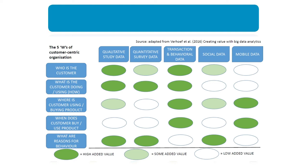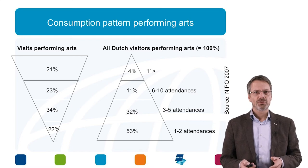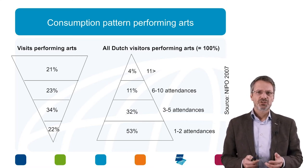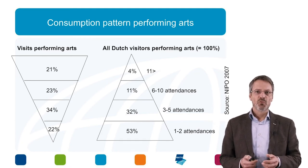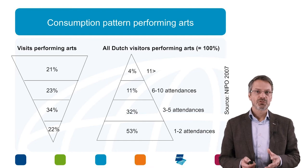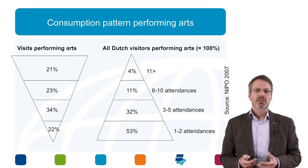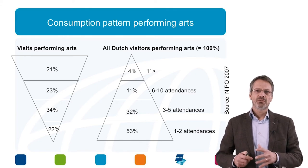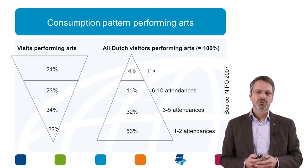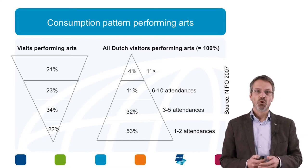Here are some examples about customer knowledge in the performing arts. This concerns consumption patterns of Dutch performing arts visitors — representing 100% in this case. A large number, more than 50%, attend a performing arts performance only once or twice. There is a small core audience representing 15%, attending six times or more. This 15% is buying 44% — almost 50% — of all tickets.